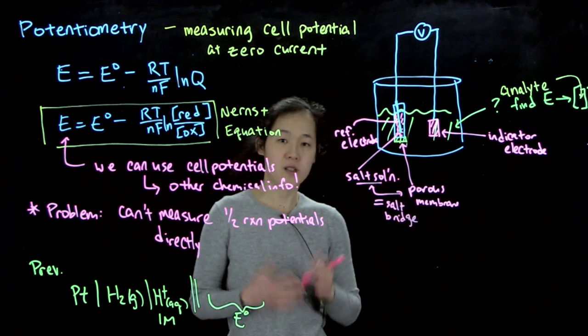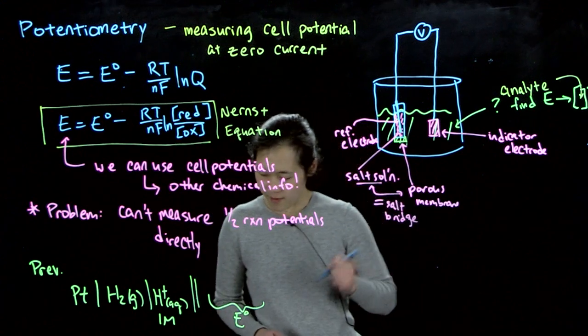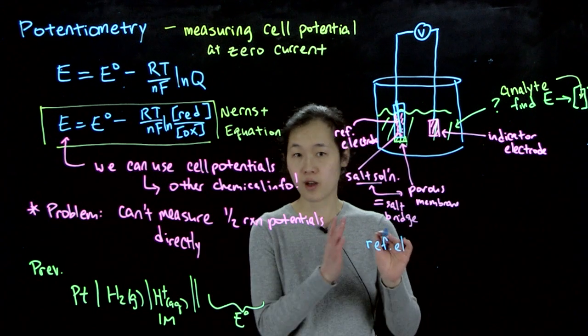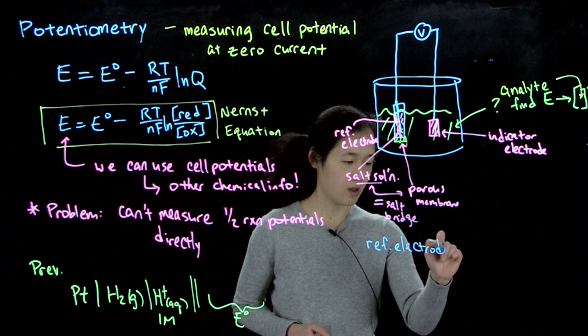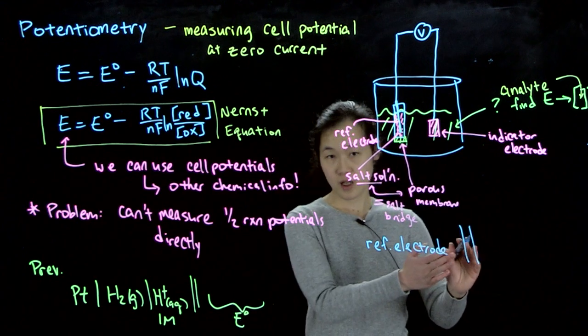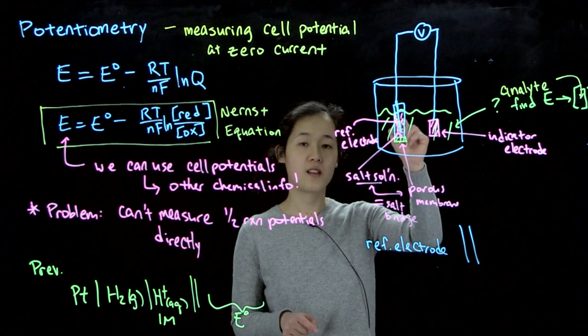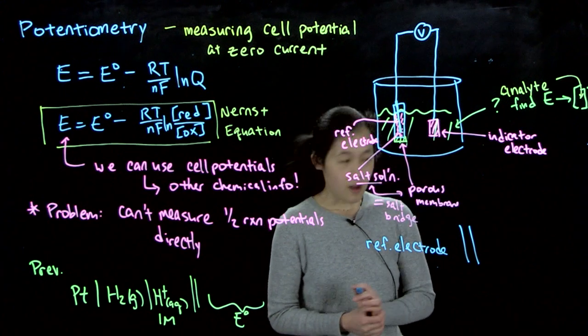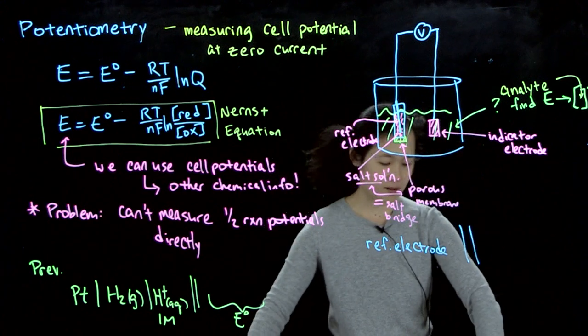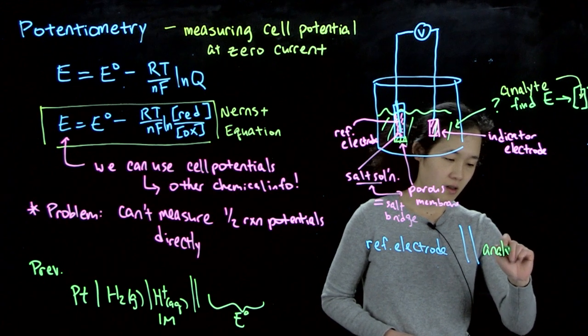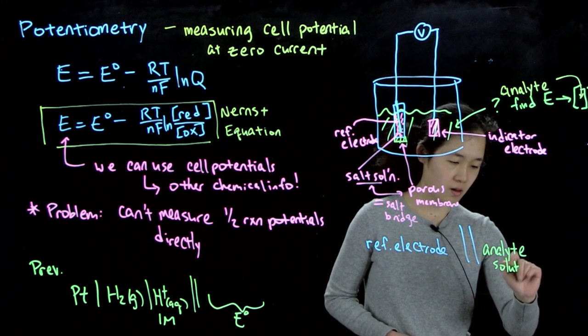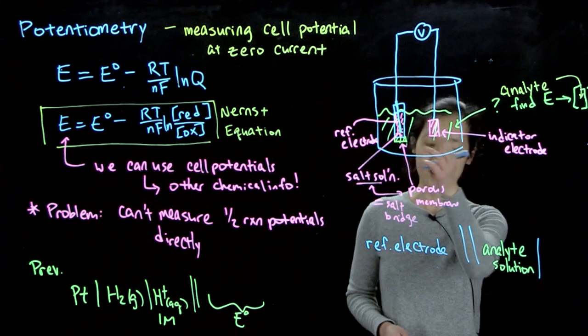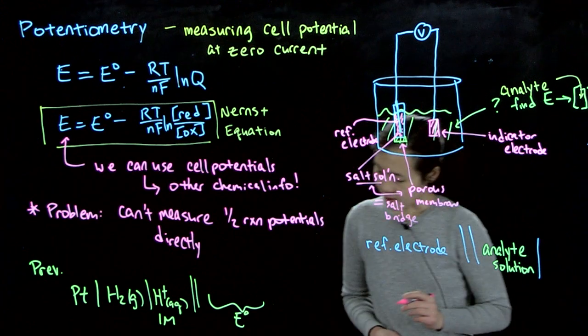So if we were to express this in terms of our typical cell notation, what we have is, we'll have our reference electrode by convention written on the left. And then we'll have our salt bridge, which is, again, this porous membrane and the salt solution within the reference electrode beaker. Or I guess, in this case, it's a tube. It's a sealed off glass tube. And then we'll have our analyte solution, which is this green thing. So analyte. And we'll have some sort of phase boundary, because this is in solution, and our pink over here is the indicator electrode.